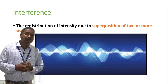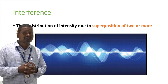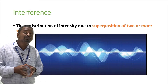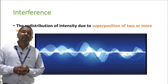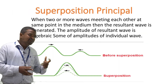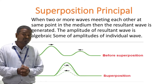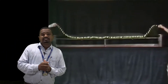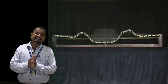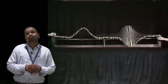Now let's study the definition of interference. Interference is nothing but the redistribution of intensity of light due to superposition of two or more waves. There is a superposition of two or more waves, which is why interference occurs. In the superposition principle, two or more waves meet each other in the medium at the same time, and a resultant wave is generated. That resultant wave has an amplitude which is the algebraic sum of the amplitudes of the individual waves. You can see a small animation of the superposition principle on the screen.